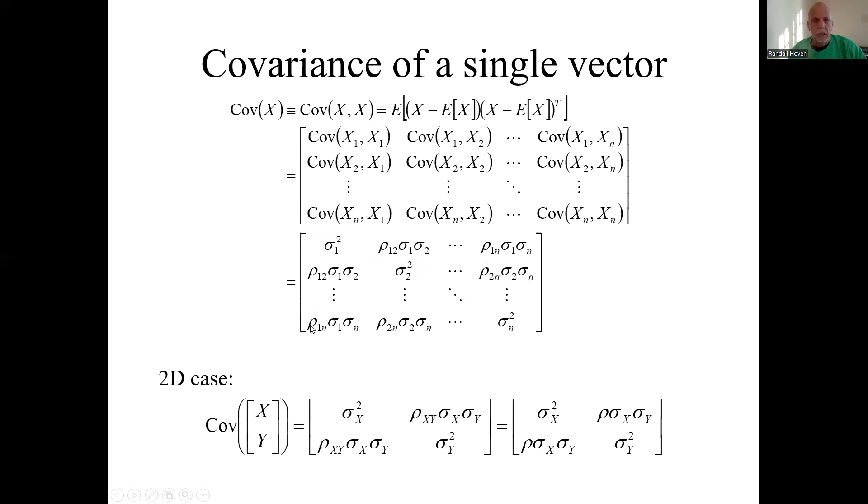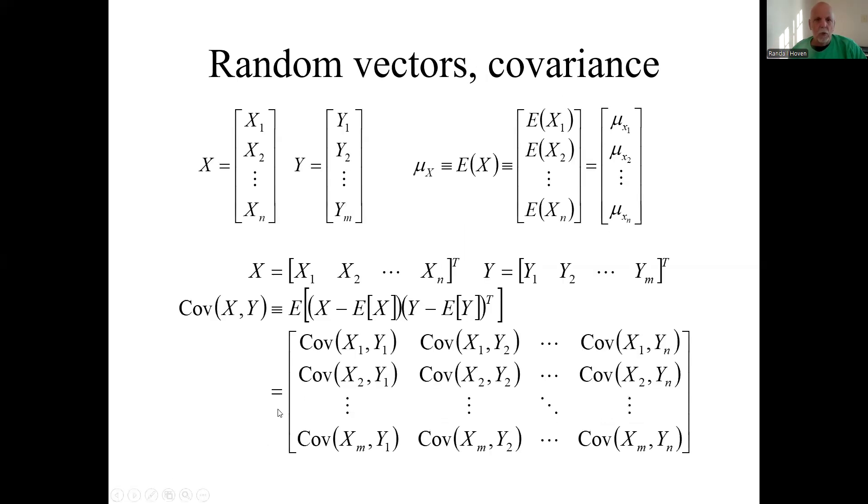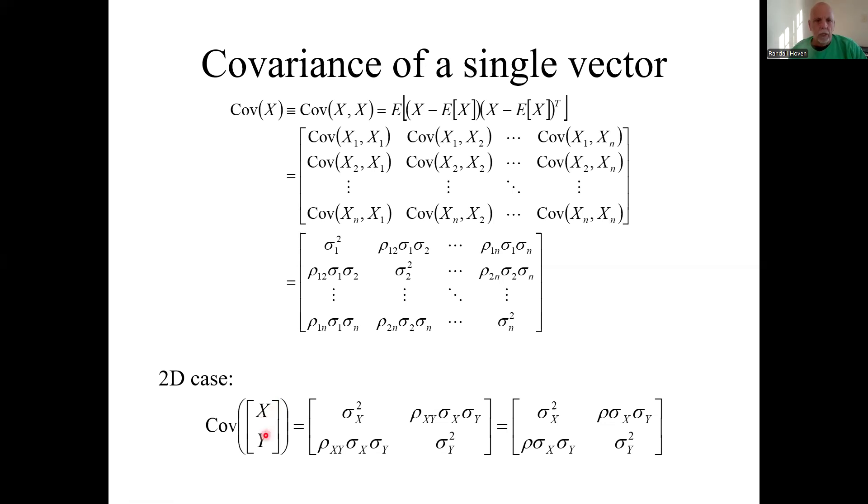If you only have two random variables in your vector, I'm switching notation a little bit here. X and Y are just plain old random variables, not vectors. The vector is X on top, Y on bottom in this example. Here's what that covariance of that random vector would look like. Since there's only two variables, we don't need to put the subscripts on the correlation coefficient. This would be what the covariance matrix looks like if you're talking about a vector of two random variables. It's the two variances down the main diagonal and then these things on the off diagonals. These are always symmetric matrices, by the way. The covariance of a single random vector is a symmetric matrix.